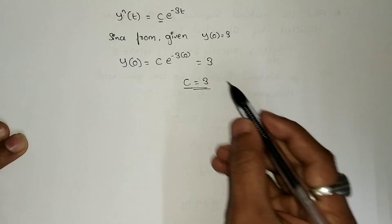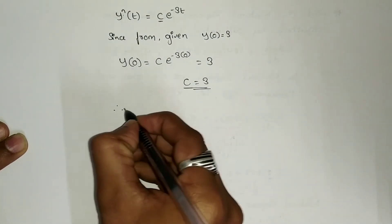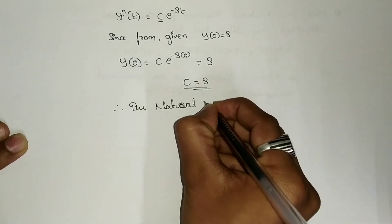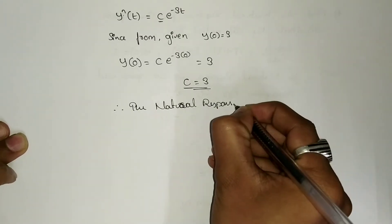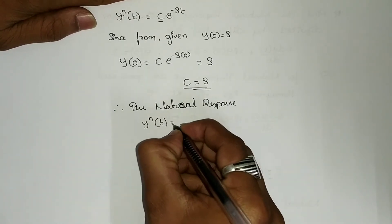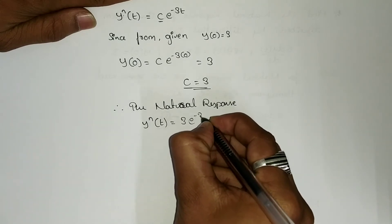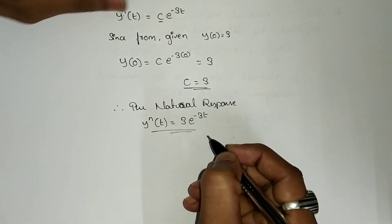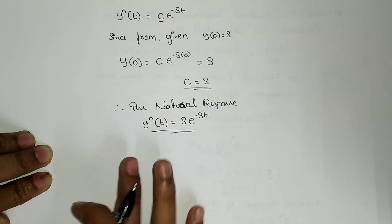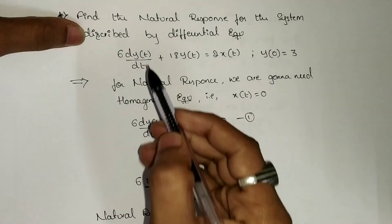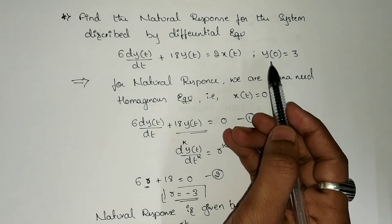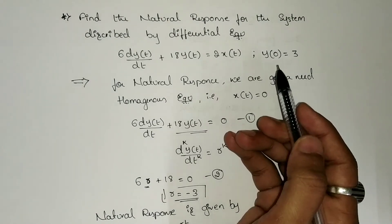Now substituting the value of C, the natural response is y_n(t) = 3 · e^(-3t). This is the natural response for the given equation 6 dy(t)/dt + 18 y(t) = 2 x(t) with initial condition y(0) = 3.